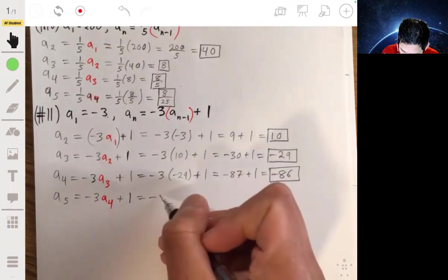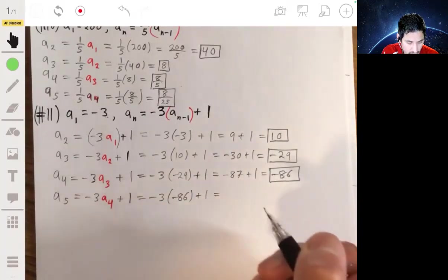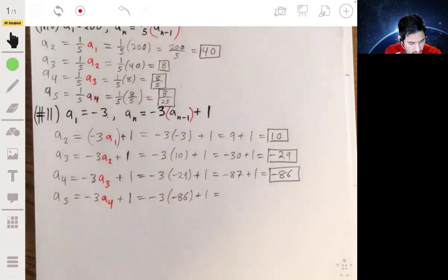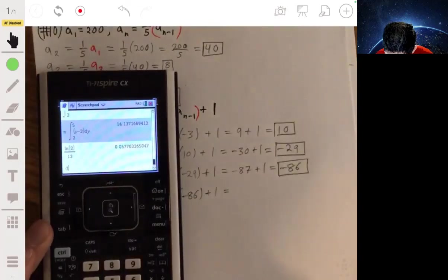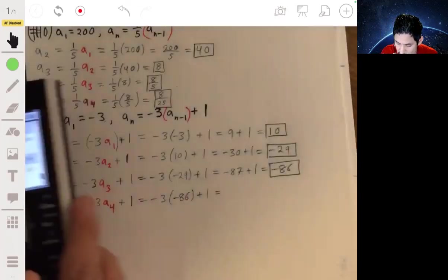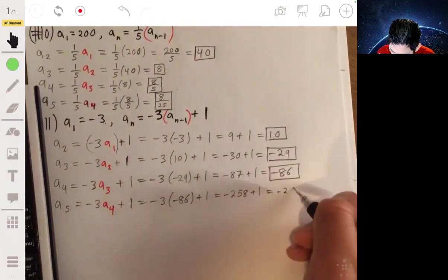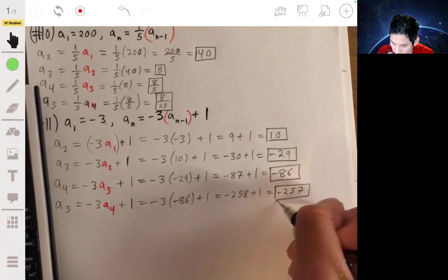And then a5 would be negative 3 times negative 86 plus 1. And let me double-check if that is. Negative 3 times negative 86 would be 258, so 258 plus 1, and then you would get 259 for a5.